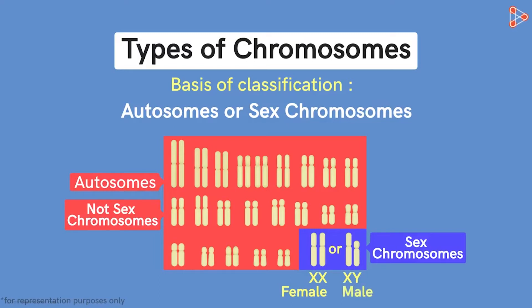This pair is the sex chromosomes. The chromosomes which help in determining the sex of an individual are called sex chromosomes, or even called allosomes. This is all about the different types of chromosomes. Hope you all enjoyed the video. Thank you.